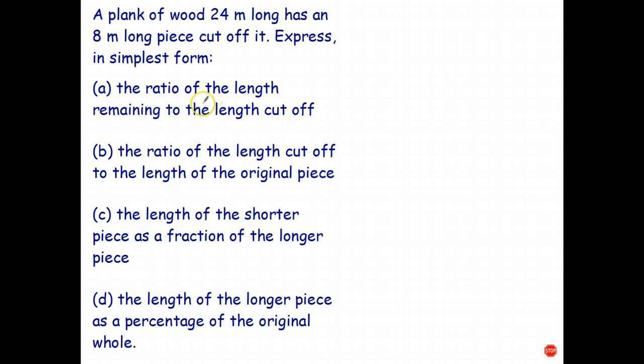The ratio of the length remaining, well, that's going to be 16, compared to the length cut off. Well, the length cut off was eight. So, we've got the 16 by going 24 subtract 8. We simplify that by dividing by eight, and that's going to give me two is to one. So, the ratio of length remaining to the length cut off is two is to one.